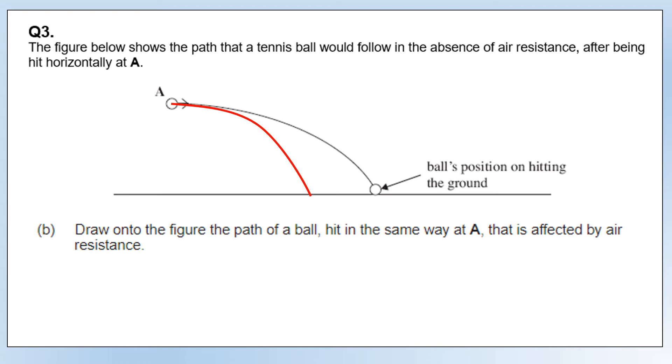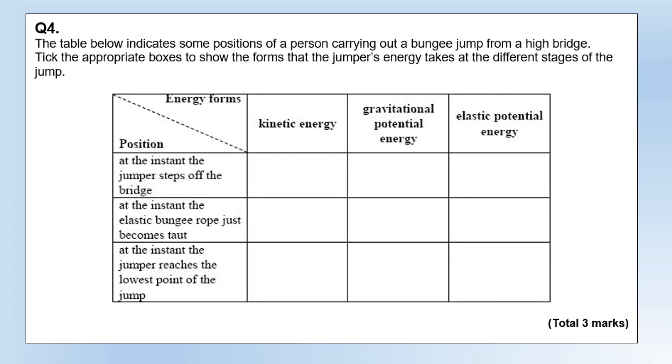We're looking at a person carrying out a bungee jump from a high bridge. Tick the appropriate boxes to show the forms that the jumper's energy takes at different stages of the jump. At the instant the jumper steps off the bridge, you're starting with gravitational potential energy—this is why you're able to get kinetic energy as you fall.